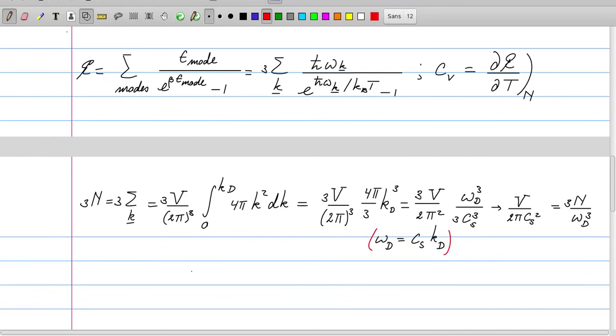We obtain this result in which we have combined these two factors here. We have replaced the k_D to the third by omega_D over c_s to the third. From that we can immediately conclude that V over 2π c_s squared is equal to 3N over omega_D to the power three.